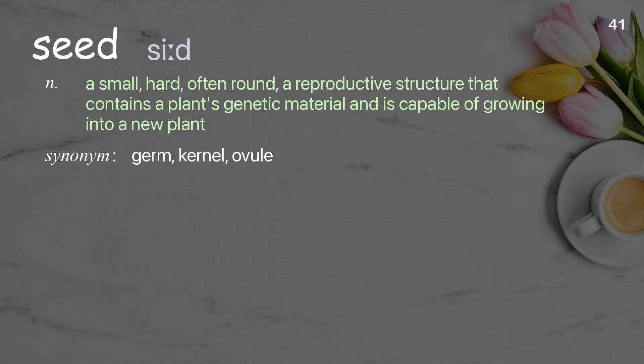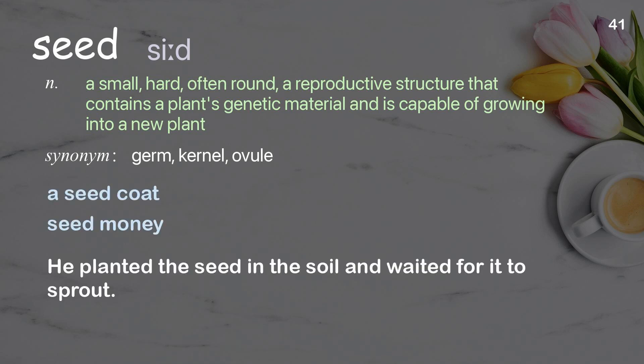Seed: a small, hard, often round reproductive structure that contains a plant's genetic material and is capable of growing into a new plant. Examples: a seed coat, seed money. He planted the seed in the soil and waited for it to sprout.